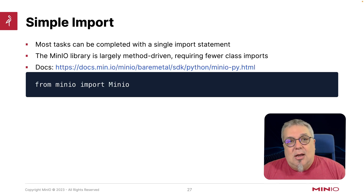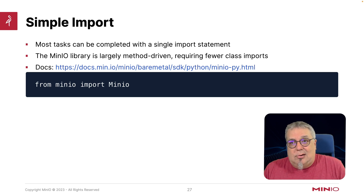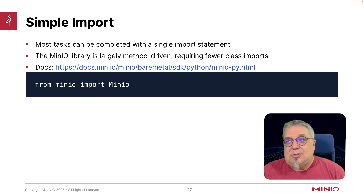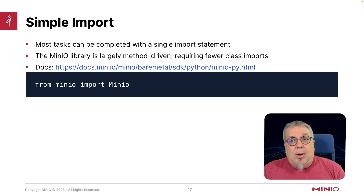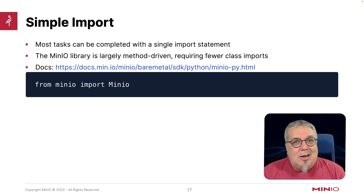The nice thing about the MinIO library is that it is largely method-driven, which means I only have to do one real class import and then I can do everything. The documentation takes you to our SDK for Python and gives you all the details. But at the top of my code, I would just do: from minio import Minio. Now I can do all my MinIO work in my Python code.